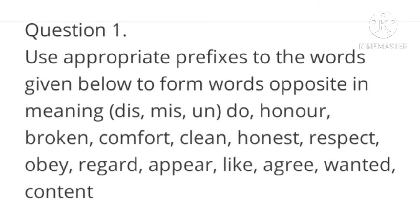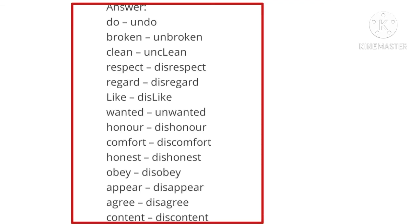Use appropriate prefixes — dis, un — to form words opposite in meaning: do/undo; broken/unbroken; clean/unclean; respect/disrespect; regard/disregard; like/dislike; wanted/unwanted; honor/dishonor; comfort/discomfort; honest/dishonest; obey/disobey; appear/disappear; agree/disagree; content/discontent. These are the prefixes that, when added to the root word, give the exact opposite meaning.